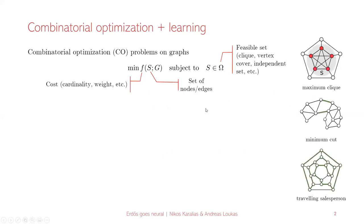Thanks a lot for the invitation. I'm talking about a merge between combinatorial optimization and learning. Particularly I'm interested in the types of problems written in this form generally — where you have a graph as your input. I'm a graph person, that's why maybe I'm focusing on this. You're looking for a set, usually a set of nodes or edges, and you want the set to have a small cost under the cost function f.